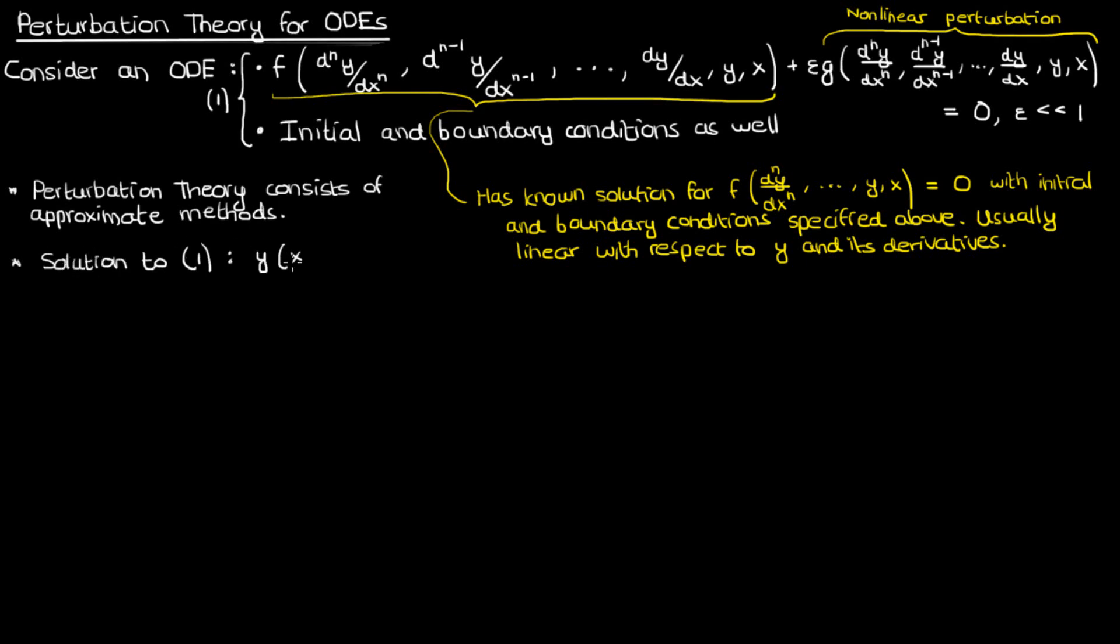When we solve equation 1, we expect a solution y that is a function of both x and the perturbation parameter epsilon. The closer this epsilon is to 0, the closer y is to the simple y of x. Now in order to actually find an expression for y of x and epsilon, we need to think back to first-year calculus. How do we approximate the behavior of a function that has been slightly perturbed from a point that we know about, in this case y of x? Well, we use a Taylor series.